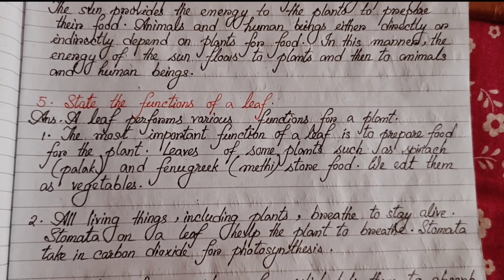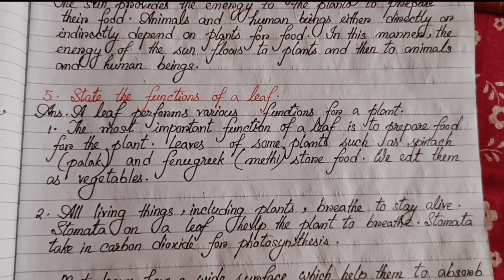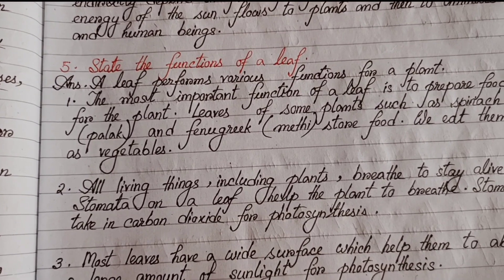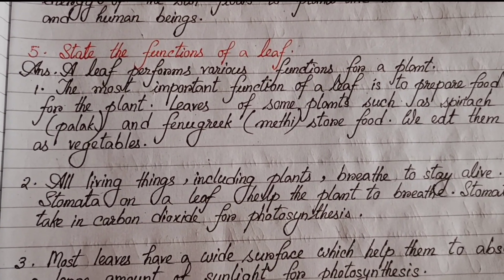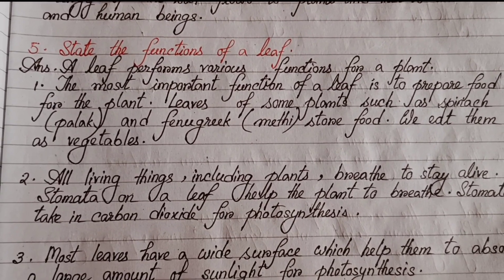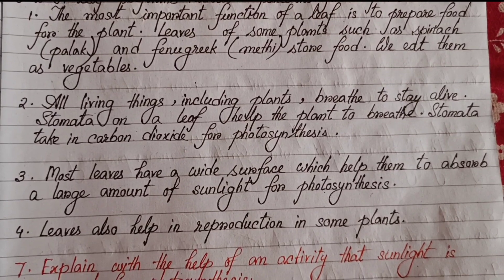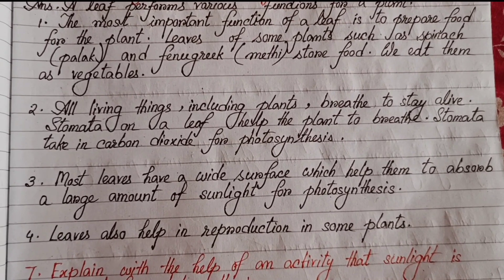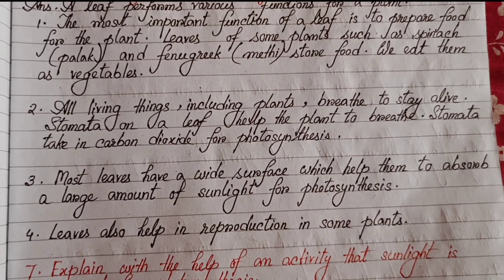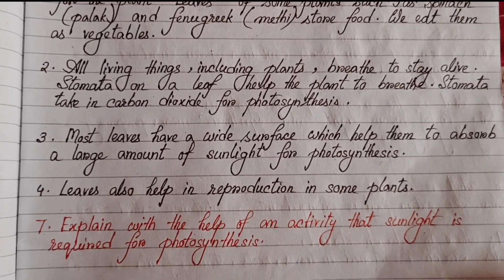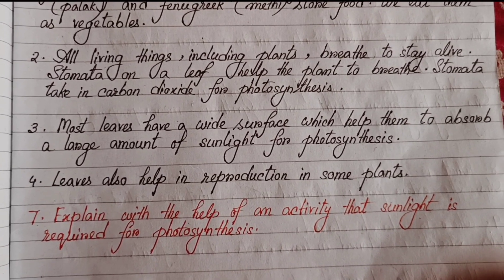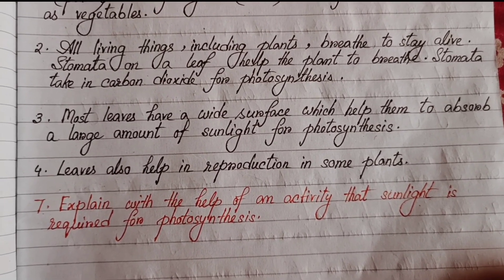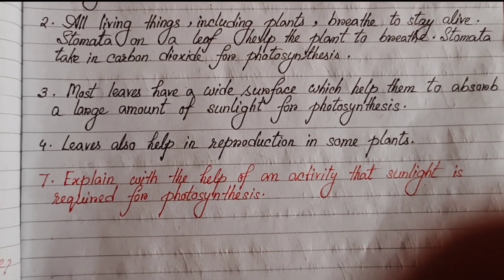Number five: State the functions of a leaf. A leaf performs various functions for a plant. The most important function is to prepare food for the plant. Leaves of some plants such as spinach and fenugreek store food — we eat them as vegetables. All living things including plants breathe to stay alive. Stomata on a leaf help the plant breathe by taking in carbon dioxide for photosynthesis. Most leaves have a wide surface to absorb a large amount of sunlight.